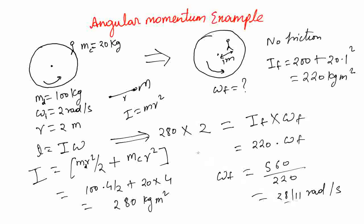And you can see this is more than 2 radians per second. The disk is going to increase its angular velocity to compensate for reduced moment of inertia to make sure that angular momentum stays constant.